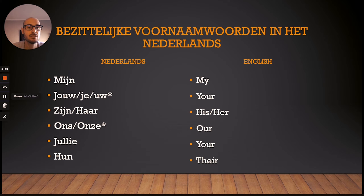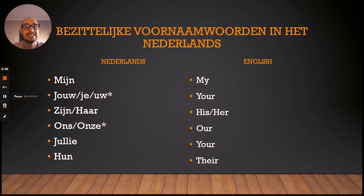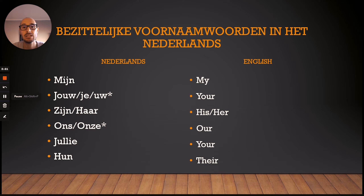So we'll focus on the left side first. Mijn would be my. And then for 'your' we have three options: we have jouw, je and u. You see I placed a little star there, so we'll get back to them and I'll explain the difference between these three. Then zijn would be his and haar would be her. Ons and onze would mean our — again, a small star there, we'll get back to it and I will explain what the deal is with ons and onze.